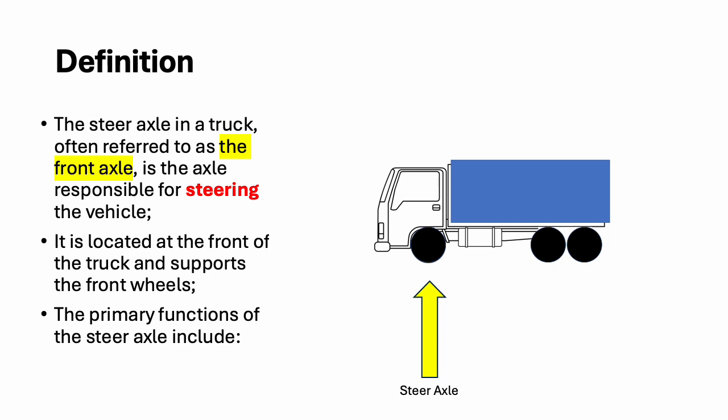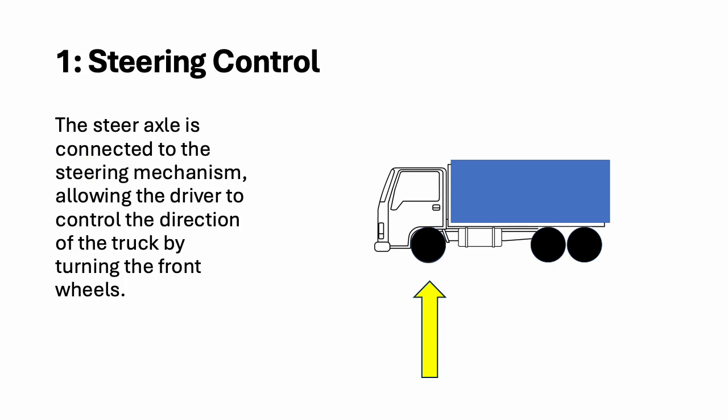The primary functions of the steer axle include: 1. Steering control — the steer axle is connected to the steering mechanism, allowing the driver to control the direction of the truck by turning the front wheels.